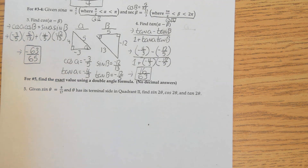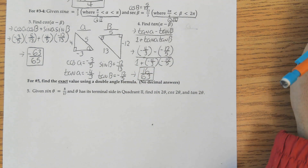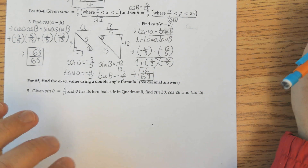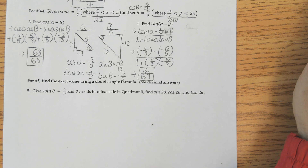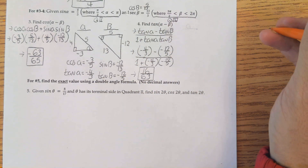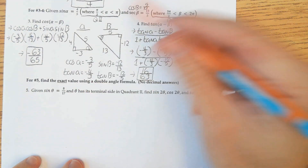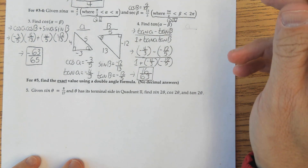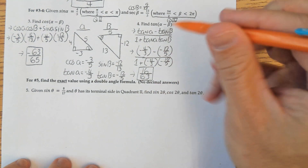Given that sine theta equals 8 over 17 and theta has its terminal side in quadrant 2, we're going to find sine 2θ, cosine 2θ, and tan 2θ. I need to draw a triangle — I only know sine theta, so I need to find cosine theta and tangent theta to use in the formulas.